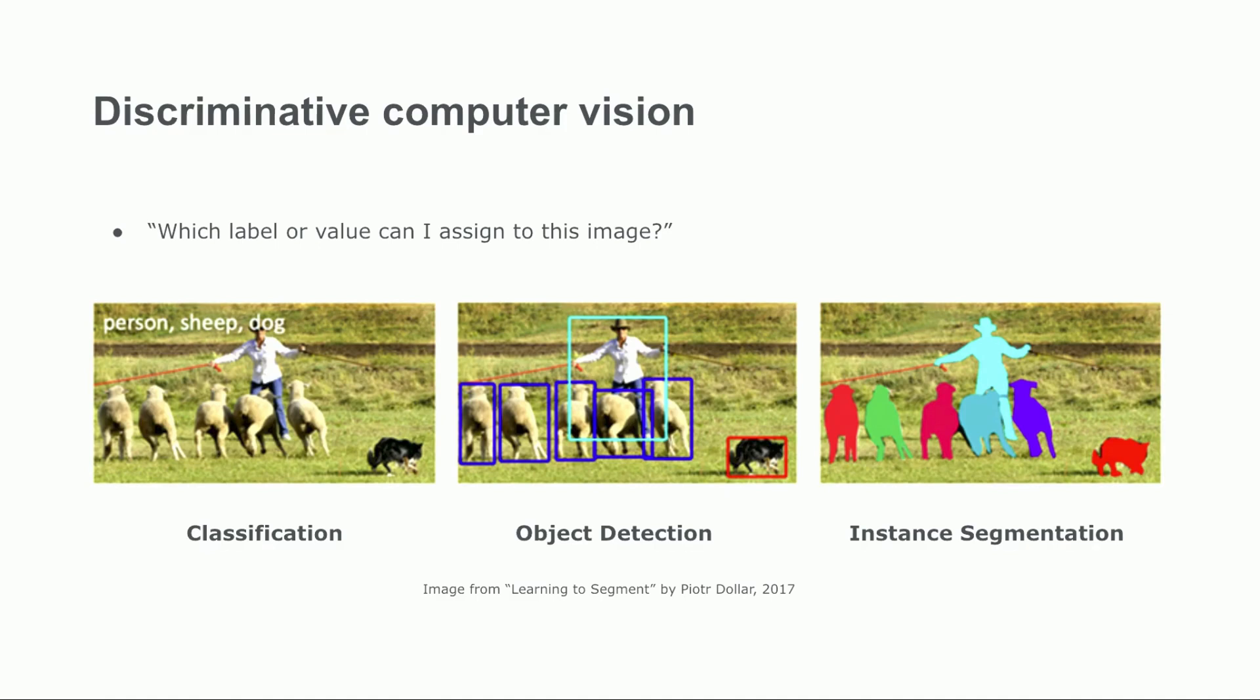Classification models assign global labels to entire images. For example, an image might be labeled as containing a person, sheep, or dog, without specifying where these objects are located in the image.